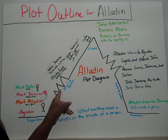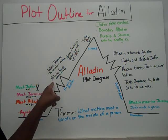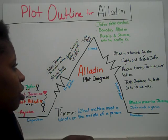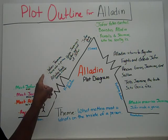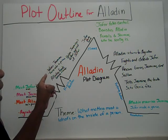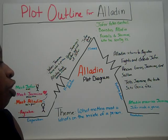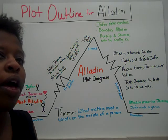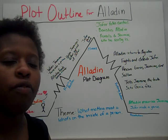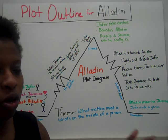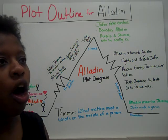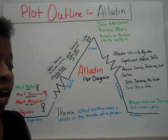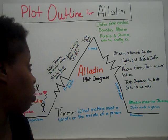Moving on to the rising action, Aladdin finds the genie, the lamp, and the magic carpet. Aladdin makes the genie turn him into a prince so that he can woo Jasmine and fall in love with her, because as the sultan decrees, a princess can only marry a prince — he can't marry a poor street rat.